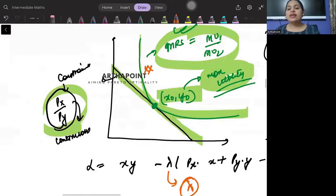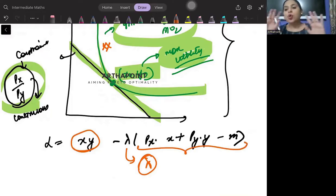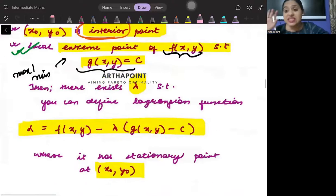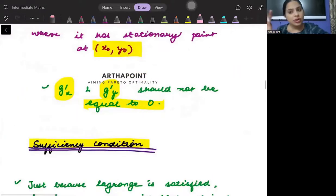So, where do I use Lagrange? I use Lagrange when I have interior point, when my utility function or the objective function is well defined, when it is continuous, when my constraint is continuous, both their slopes are well defined. In that, I set up a Lagrange and the value of the lambda is also defined. There exists a lambda such that I can set up the Lagrange. Clear hoi ye baat?